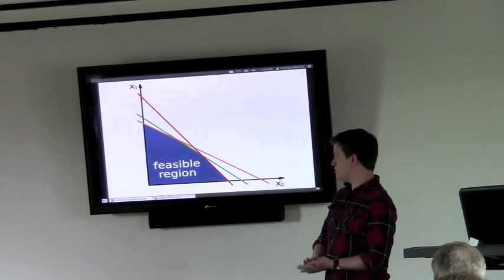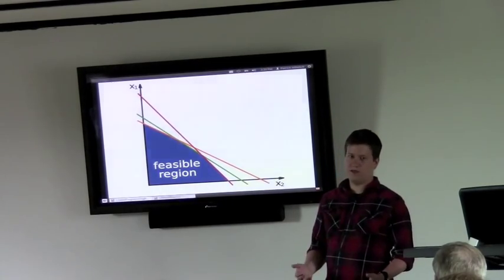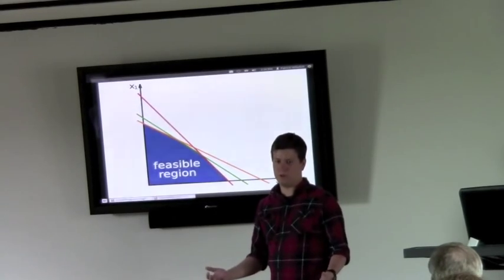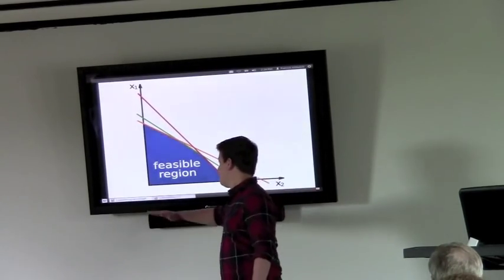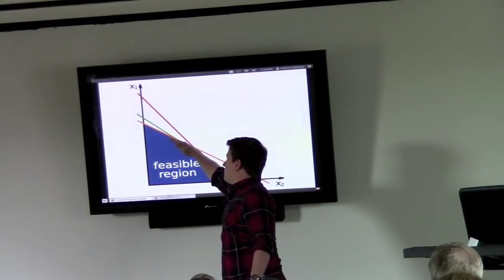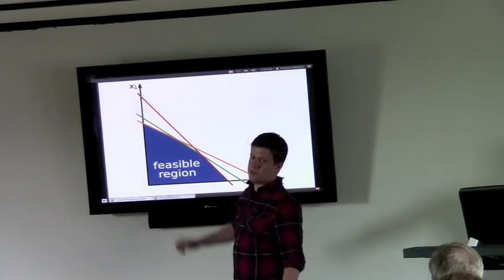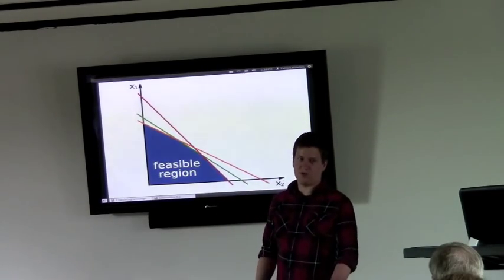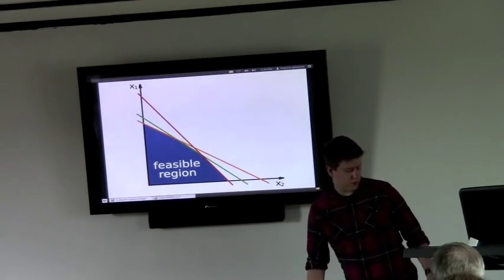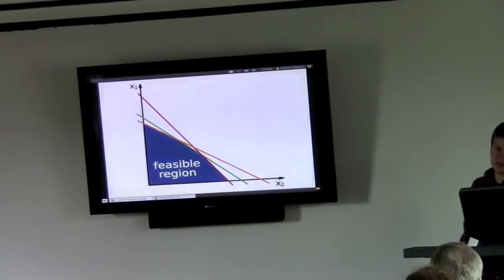And then I haven't drawn the objective function on here, but basically it defines a direction where the value that you want to maximize is increasing. So you can sweep that out, and the last place where it crosses out of the feasible region is the optimal solution to your problem at that point. So what can you do with these things? It turns out you can actually do a whole lot of things with them. I'm just going to give a few examples here.